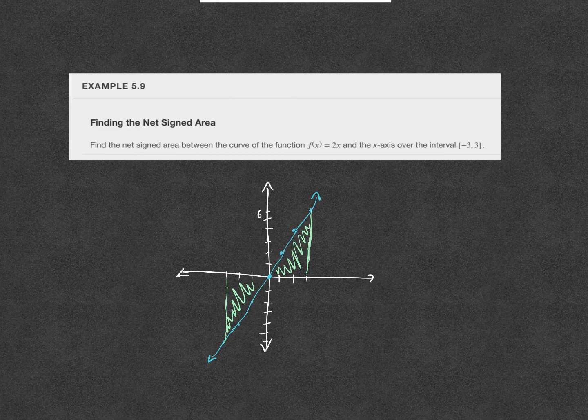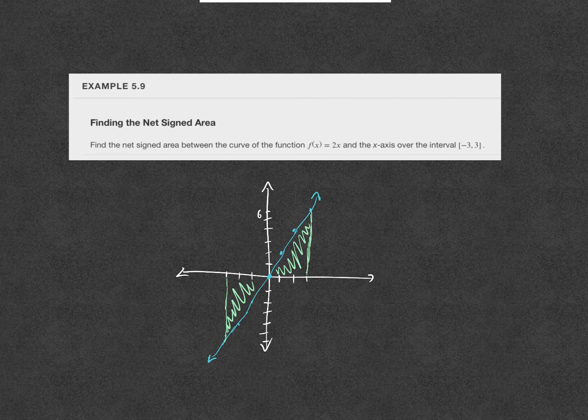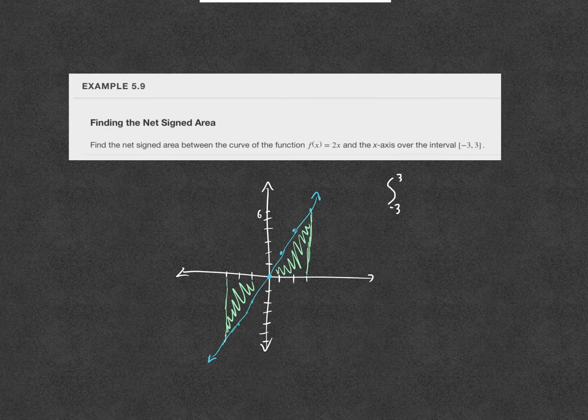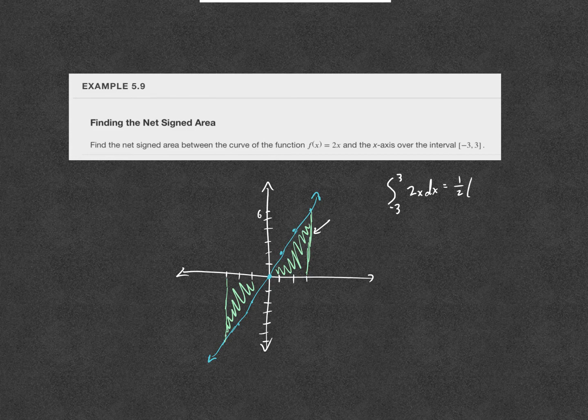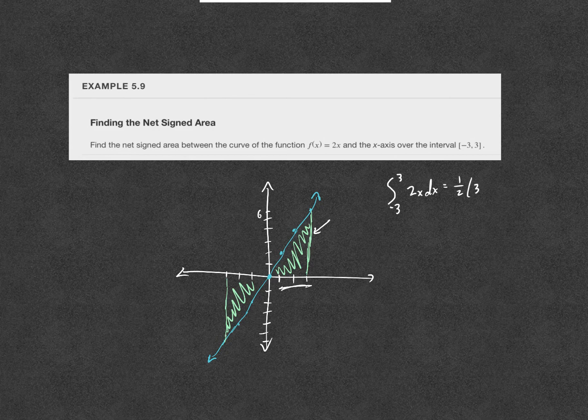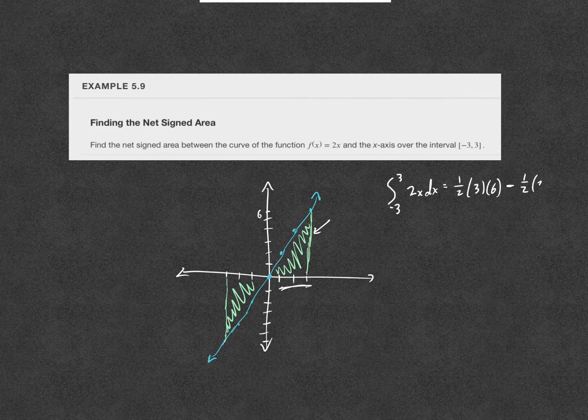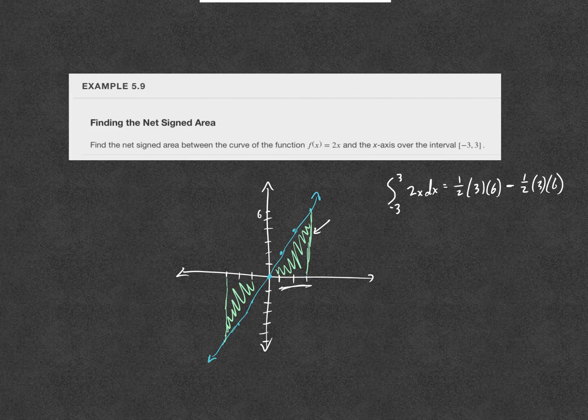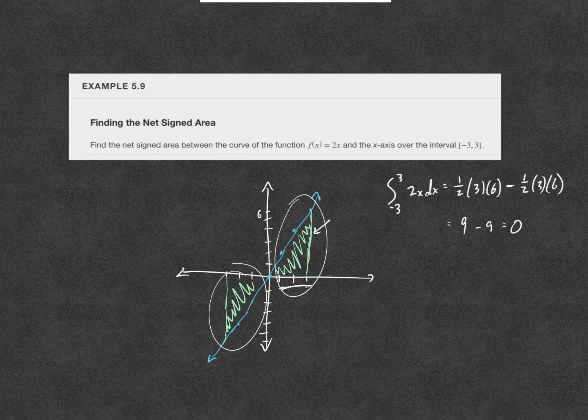And I knew how to find area of a triangle way before I ever took calculus. So for this one, I'm going to set it up using the fancy notation. We are evaluating the definite integral from negative 3 to positive 3 of 2x dx. And that is given by the area of that triangle, 1 half, the base is 3, and the height is 6, minus the area of the other triangle, the one below the x-axis, 1 half times base 3 times height 6. So when we multiply all this out, 9 minus 9, the net signed area is 0. That triangle and that triangle have a net area of 0.